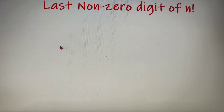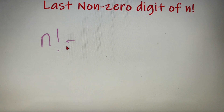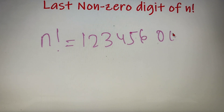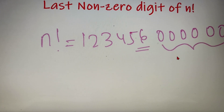The last non-zero digit of n factorial is the digit that comes just before the trailing zeros of n factorial. So suppose n factorial has a value of 1 2 3 4 5 6 and there are 6 zeros at the end. The last non-zero digit of this number is 6, because it comes just before the trailing zeros. So 6 is the last non-zero digit of this n factorial.